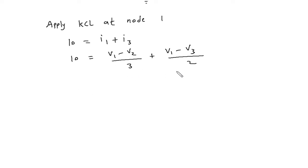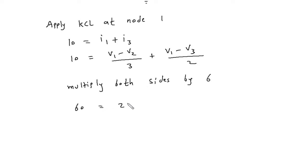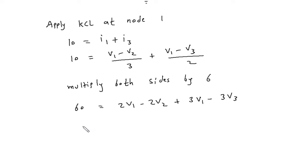We will multiply both sides by 6. So we get 60 equals 2V1 minus 2V2 plus 3V1 minus 3V3. This simplifies to 5V1 minus 2V2 minus 3V3 equals 60. This is equation number 1.